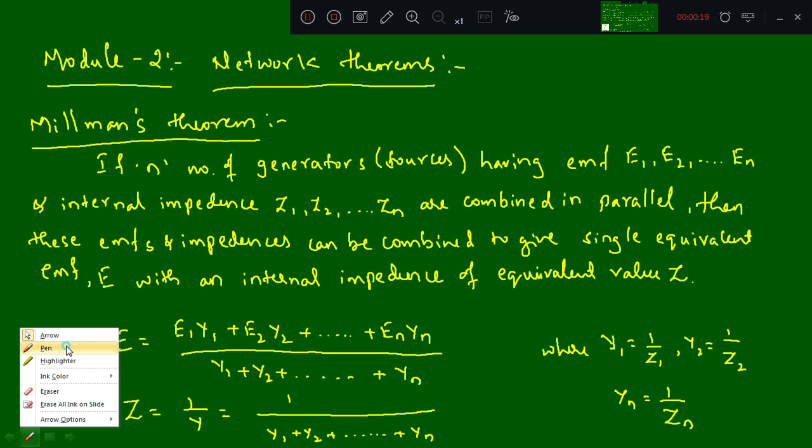In Millman's theorem, the statement given is: if n number of generators or sources having EMF E1, E2 till En and their internal impedance Z1, Z2 till Zn are combined in parallel, then these EMFs and impedances can be combined to give a single equivalent EMF E with an internal impedance of equivalent value Z.